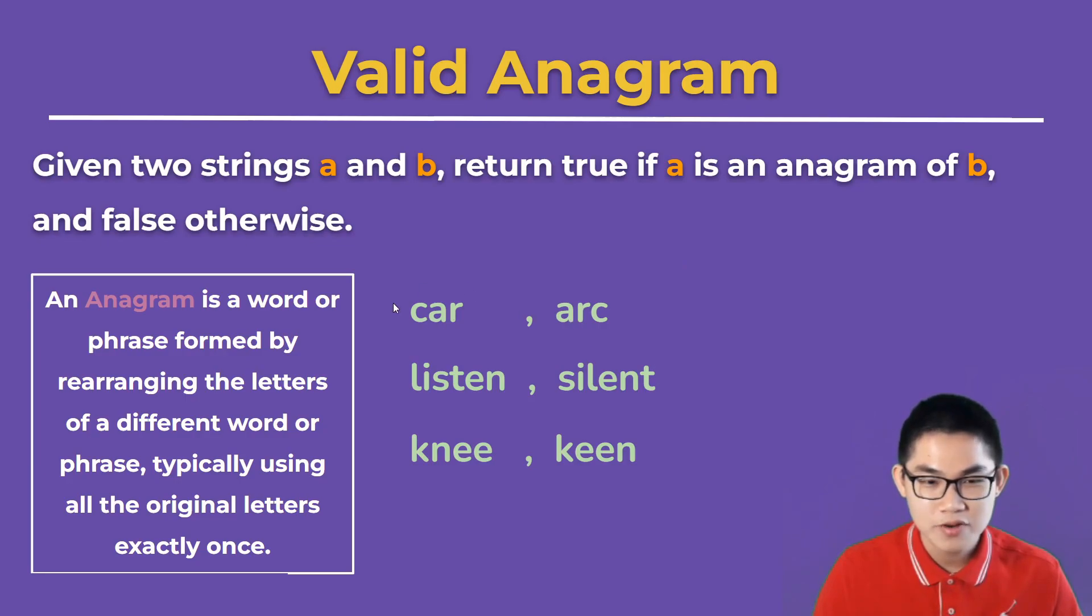We can rearrange the word car to get arc. If there's a C over here, then there has to be a C over here. Listen and silent are basically also anagrams, and knee and keen.